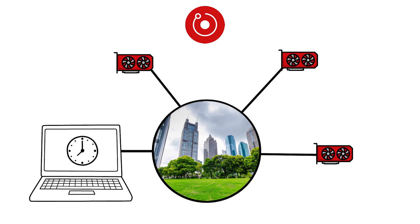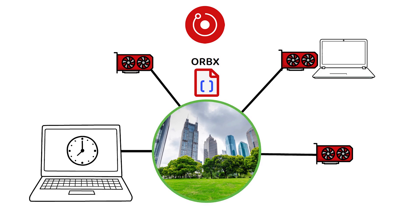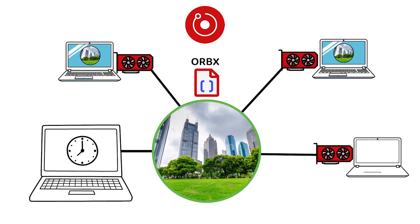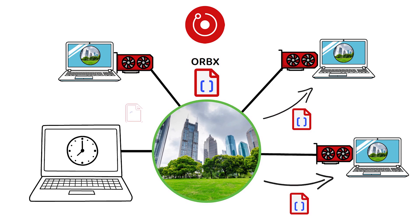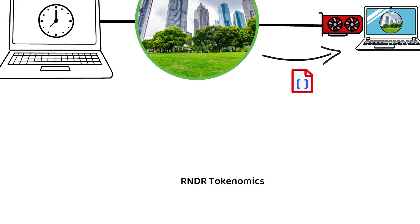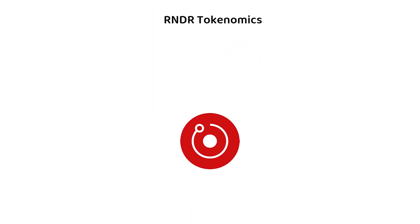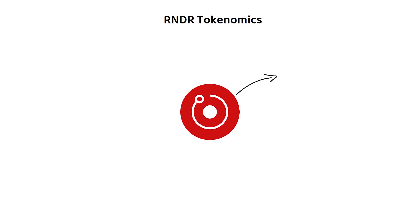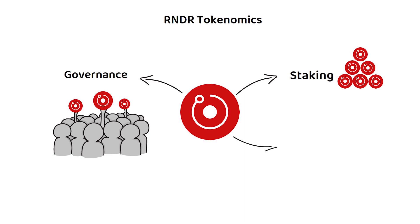What ORBX does is allow files needing rendering to be read on the computer that is providing the additional GPU power. In short, it is ORBX that provides convenience to the project, as it allows for the easy transfer of data across multiple GPU-providing participants. As for the tokenomics, Render can be used for all the proof-of-stake classics like staking, governance, and payments of services, such as buying or selling GPU power.